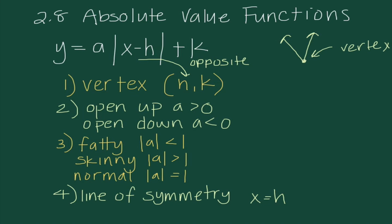The second characteristic is where the V opens — whether it opens up or opens down. If it opens up, the A value is going to be greater than 0. If it opens down, the A value is going to be less than 0.